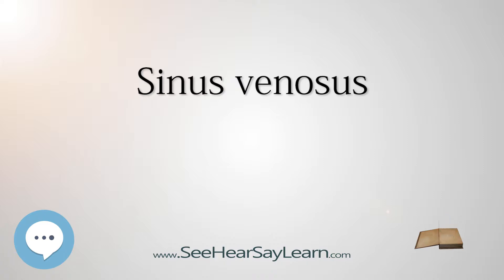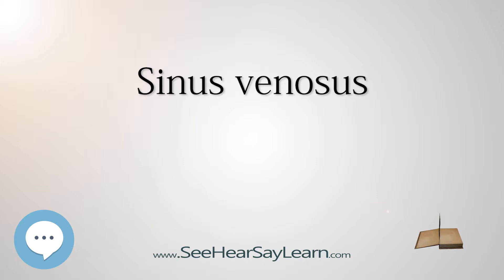In the adult, it is incorporated into the wall of the right atrium to form a smooth part called the sinus venarum, also known as the venarum sinus, which is separated from the rest of the atrium by a ridge of fibers called the crista terminalis. The sinus venosus also forms the SA node and the coronary sinus.